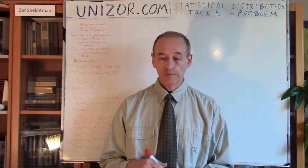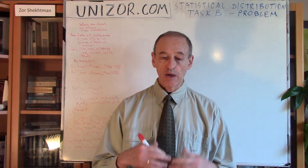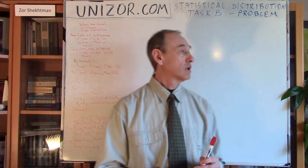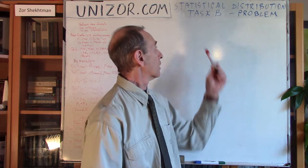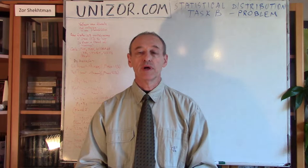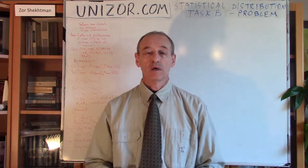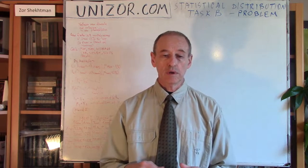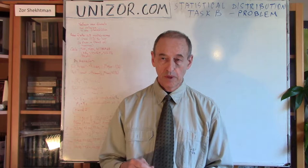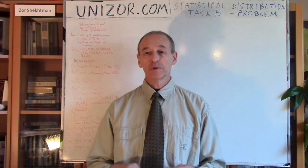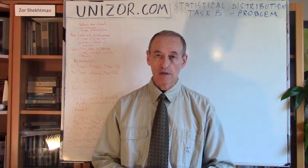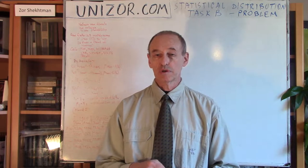The previous lecture was when we did have predefined values for our discrete random variable. Now we don't have anything predefined — we just consider that it takes certain discrete values in a certain range, but we don't know exactly which ones. I call this particular task 'Task B'; Task A was with predefined values. I will use a very concrete example to explain the methodology I suggest applying in this case.